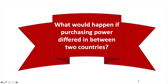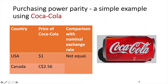What would happen if purchasing power differed between two countries? To simplify, we will only consider one good — specifically a can of Coca-Cola — as representative of the prices in the US and Canadian economies. Given our previous exchange rate of 1 USD to 1.28 CAD, we can see in this table that a Coca-Cola is twice as expensive in Canada as it is in the US.